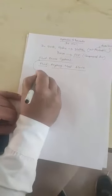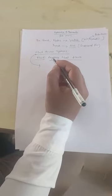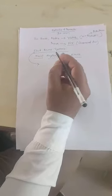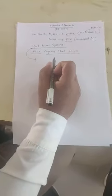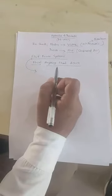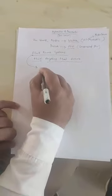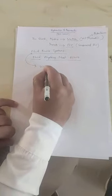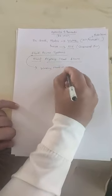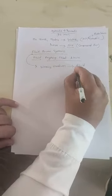In fluid power system, we will see the definition of fluid power system. It is a technology that deals with the generation, control, and transmission of forces and movement of mechanical element with the use of fluid as a medium.